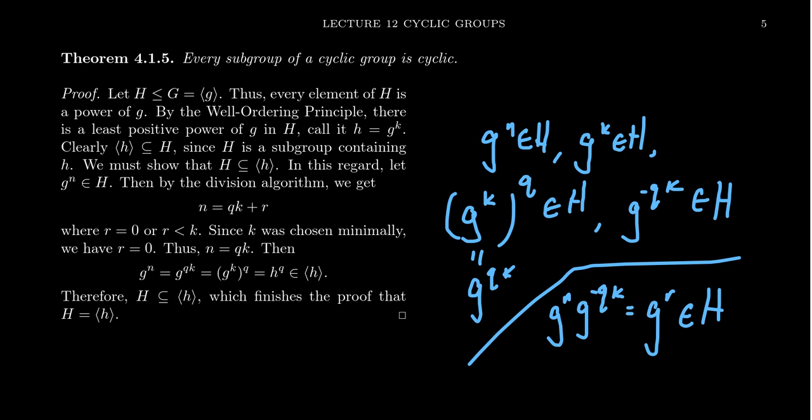And so this is where the minimality condition comes into play here. K was chosen to be the minimal positive power of g that's inside of H. R is a smaller number than k, but g to the r is inside of H. So because k is the smallest positive power, it means that r cannot be positive. But by the division algorithm, if r is not positive, then it actually must be zero.